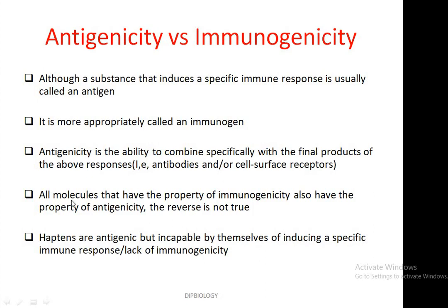All molecules that have the property of immunogenicity also have the property of antigenicity, but the reverse is not true. Haptens are antigens but are incapable by themselves of inducing a specific immune response — they lack immunogenicity — until coupled with a carrier protein or molecule.